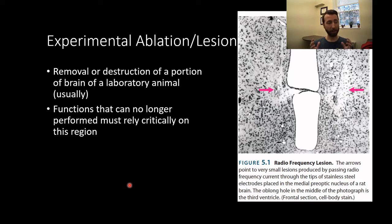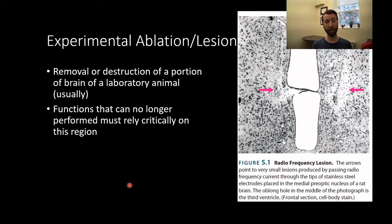If an animal can do something before a lesion and can't do it afterwards, that is evidence that that region is important for performing that function. Similarly, if a person has a traumatic brain injury, a stroke, or a tumor, and loses function of a portion of their brain, developing a deficit in some behavior, we might infer that brain region is important for that particular function.